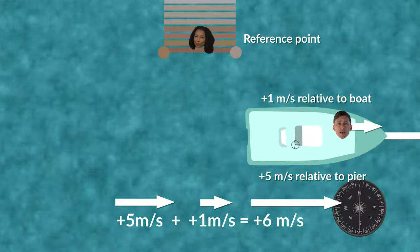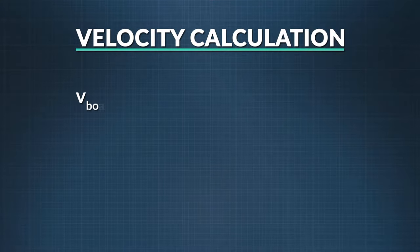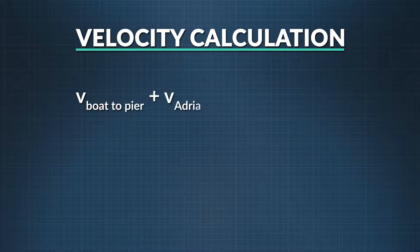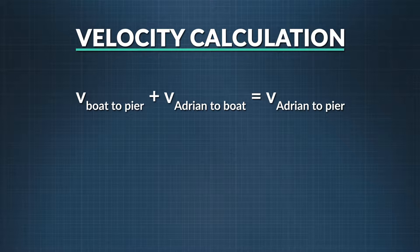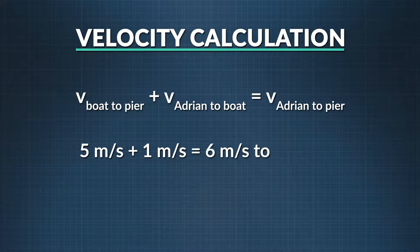Now let's solve the problem mathematically. The velocity of the boat relative to the pier, v sub boat-to-pier, and my velocity relative to the boat, v sub Adrian-to-boat, can be added together because they are in the same plane. Their sum is the resultant velocity — my velocity relative to the pier. 5 meters per second in the positive direction plus 1 meter per second in the positive direction equals 6 meters per second in the positive direction, the same answer we got using the graphical method.